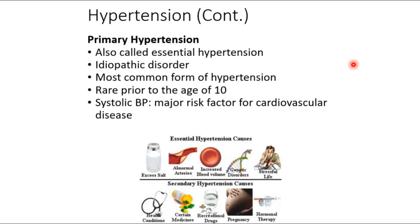Primary hypertension, also called essential hypertension, is generally considered idiopathic — no other cause identified — but it correlates with obesity. It used to be rare prior to age 10. That's the big change between old and new textbook editions: it's now becoming more and more common prior to age 10, with increasing diagnoses of primary hypertension especially in the obese pediatric population.